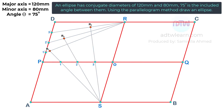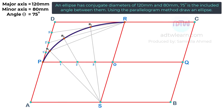If we join these points — P, R1, R2, R3, and R — we get one-fourth of an ellipse. Next, to get another one-fourth of an ellipse, we will follow the same process.